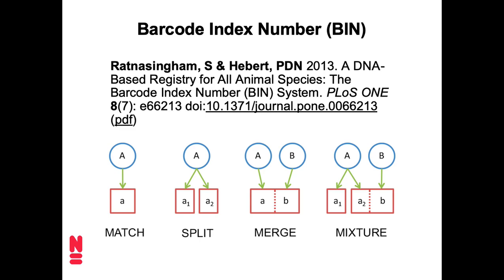These four figures at the bottom of the slide give four different possible outcomes. The ideal case is all the way on the left. Here we have a set of sequences which have all been annotated as belonging to species A. Those sequences were clustered, and it turns out that the clusters matched exactly the species. So this is the ideal case — the sequence data corresponds with whatever taxonomic assignments were made.